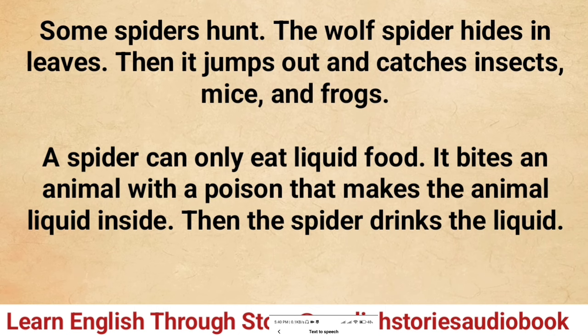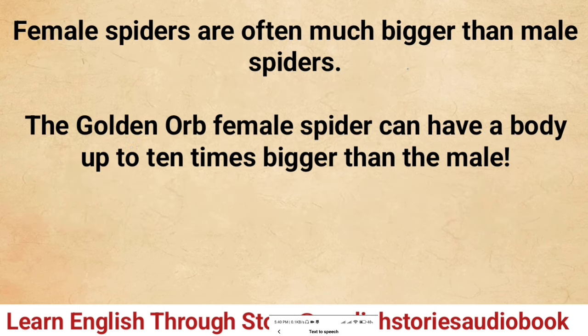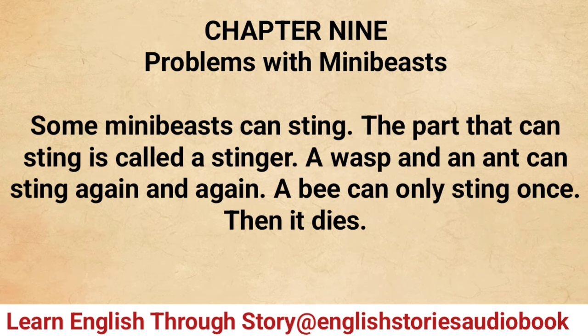Some spiders hunt — the wolf spider hides in leaves then jumps out and catches insects, mice, and frogs. A spider can only eat liquid food — it bites an animal with a poison that makes the animal liquid inside, then drinks the liquid. Female spiders are often much bigger than male spiders. The golden orb female spider can have a body up to 10 times bigger than the male.